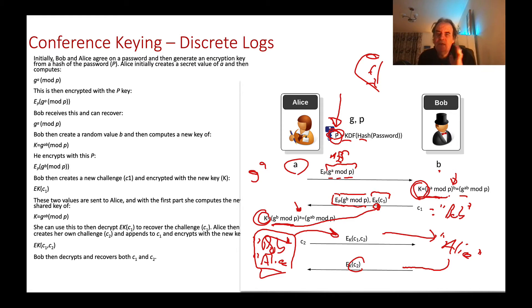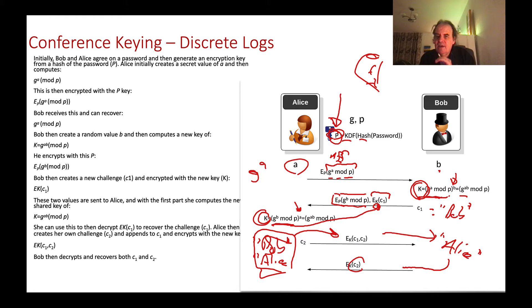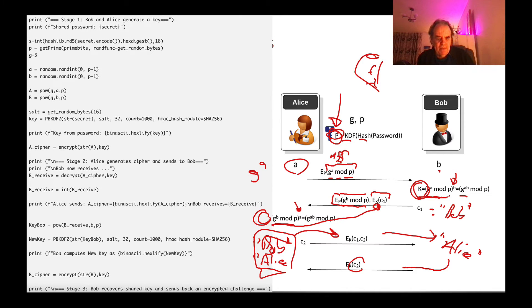In this way, we have authenticated either side, initially starting off with the seed of the password rather than a public key. So if we don't trust digital certificates and the PKI infrastructure, it may be better for Bob and Alice to share some sort of secret and then derive the encryption key K for the session.